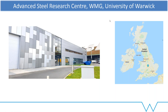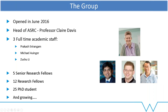I'll forgive you if some of you don't know WMG, because we're quite new. The Steel Processing Group got our own building in 2016. We're located in the centre of the UK. The head of our group is Claire Davis, and then we have three academic staff: Prakash, Michael, and Zushu. We have about five senior research fellows, 12 research fellows, and about 25 PhD students all working on steel — quite a large group, all focused on steel, housed within one building.